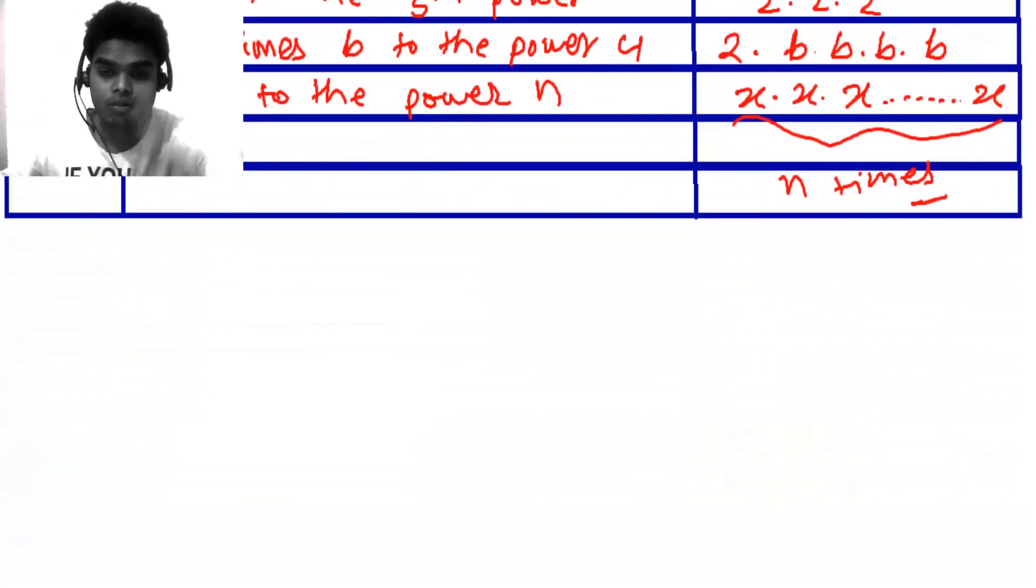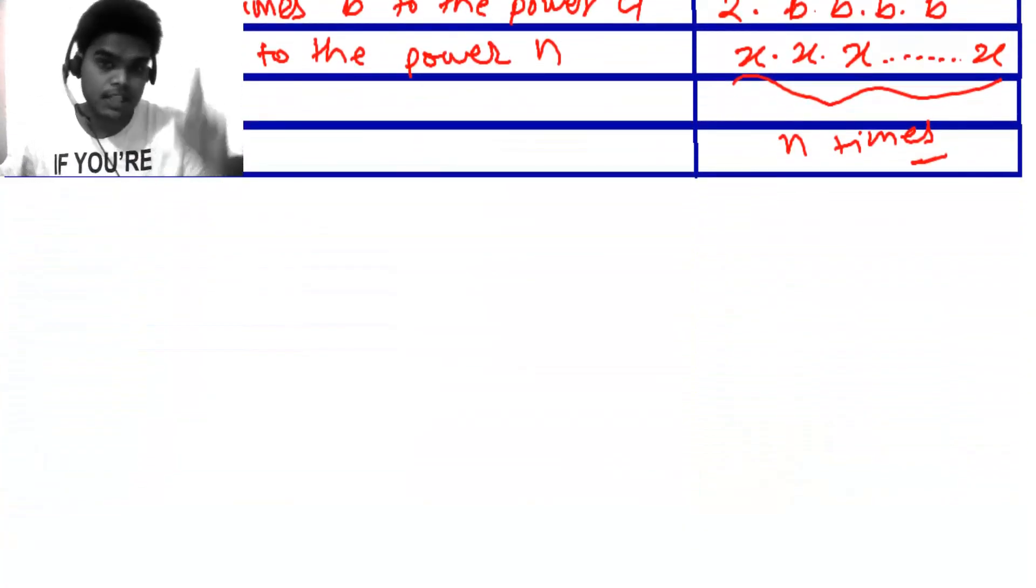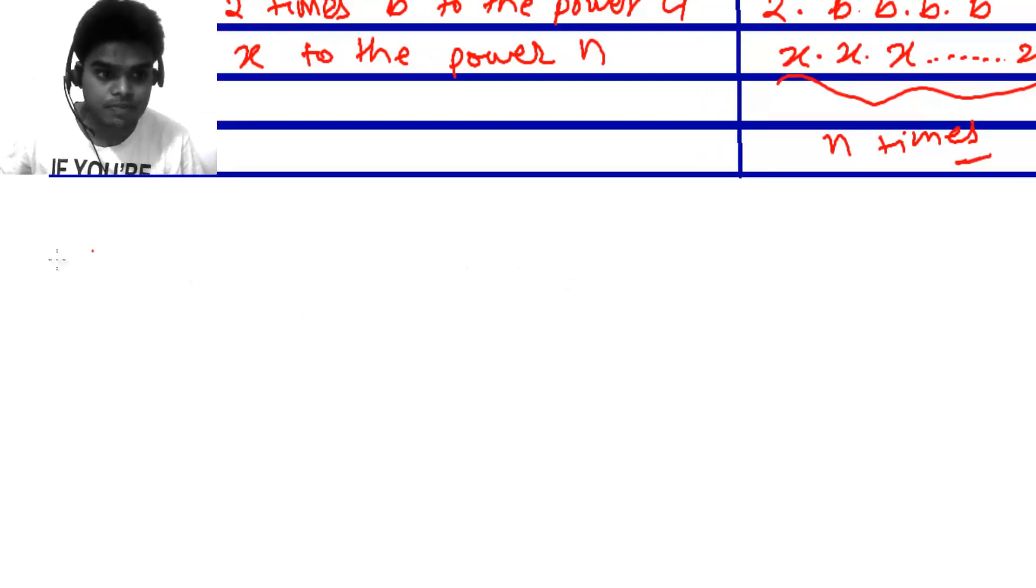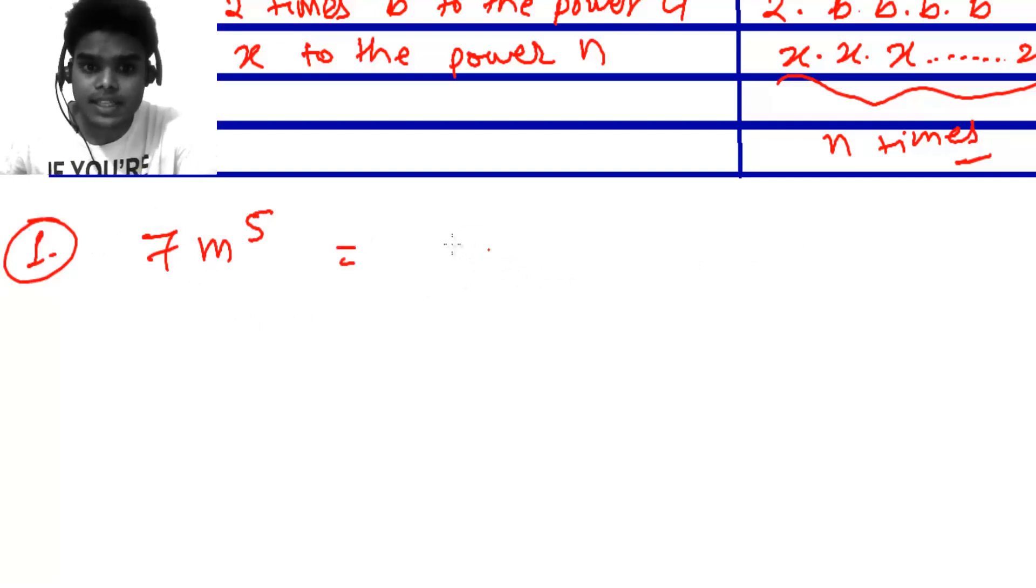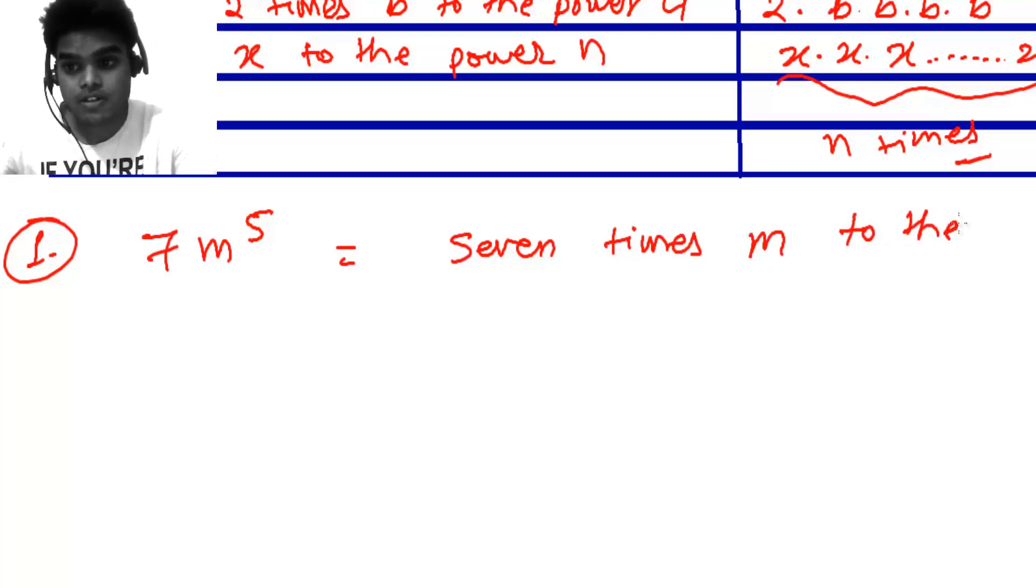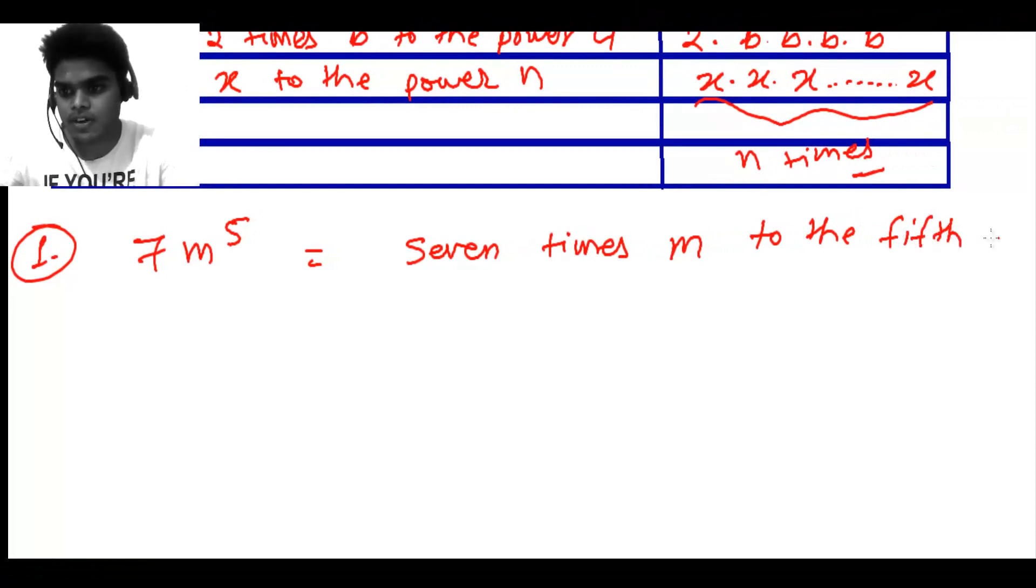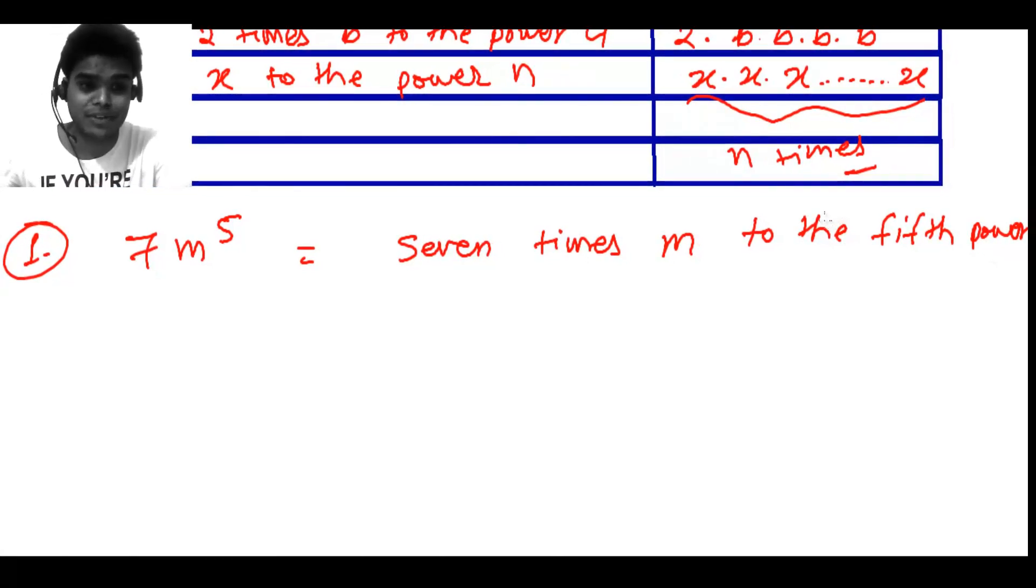Now, I'm giving you two examples. One, I will give you the algebraic expression whose verbal expression we have to write. Another example I will give you where we'll get the verbal expression and we need to write the algebraic expression. The first one: 7M to the power 5. How I'm going to write this verbally? 7 times M to the 5th power. I'm very sorry, my handwriting is the worst I think you have ever seen, and I know you agree in this.